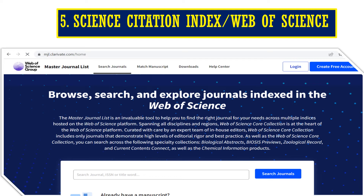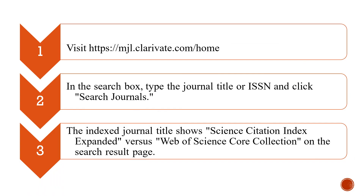Next is the fifth database, that is Science Citation Index, also called Web of Science. The first thing is you need to go to Google and type www.mjl.clarivate.com. In the search box, you can type the journal title or ISSN number and search for the journals. The indexed journal title shows the Science Citation Index Expanded versus the Web of Science Core Collection on the search page. Then once you click over there, you will get all the details about that particular journal.